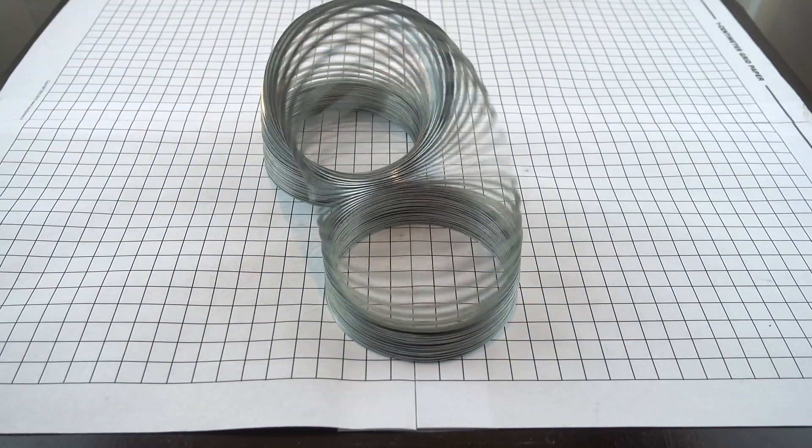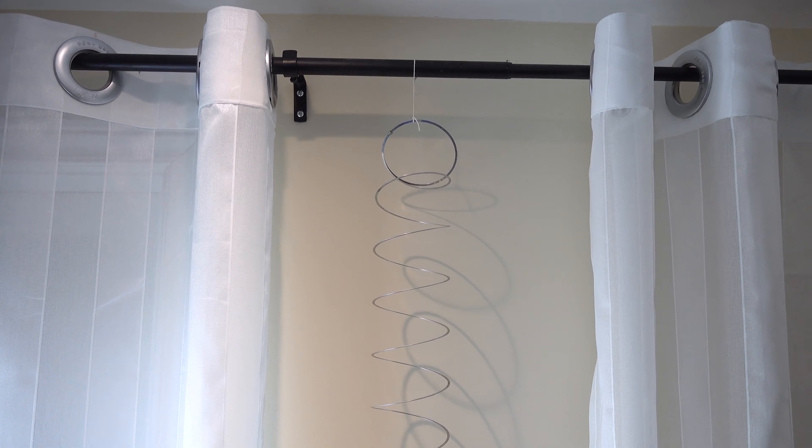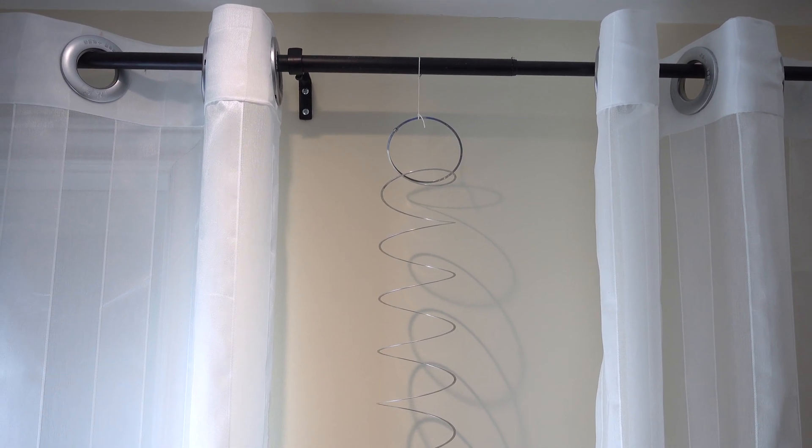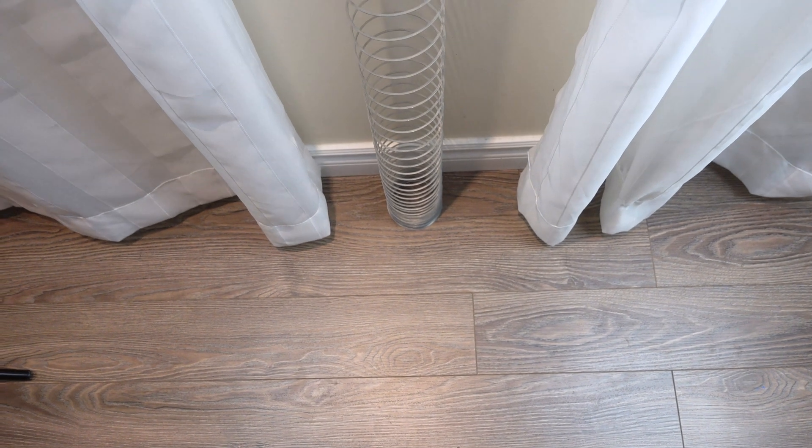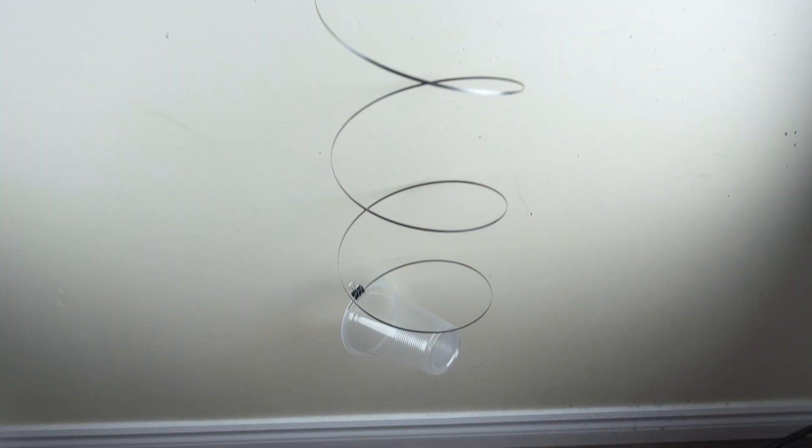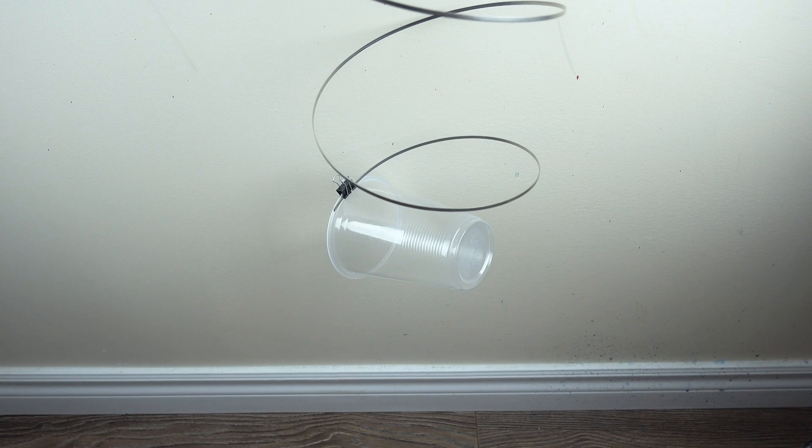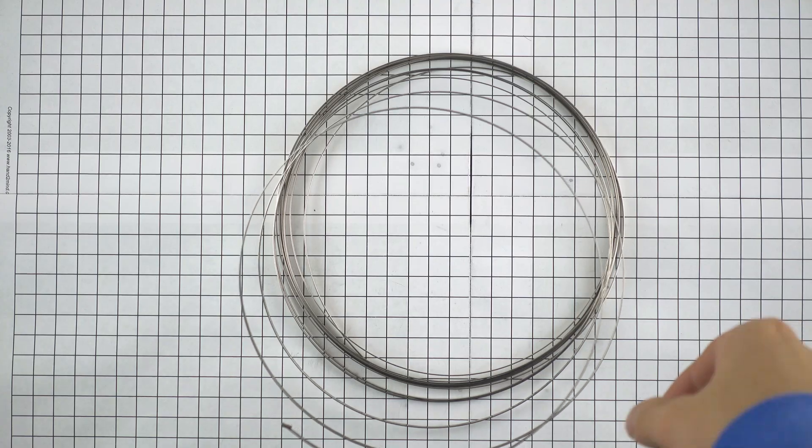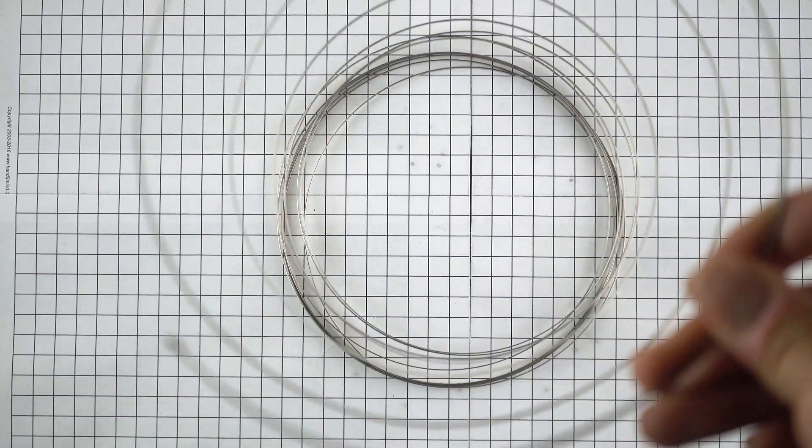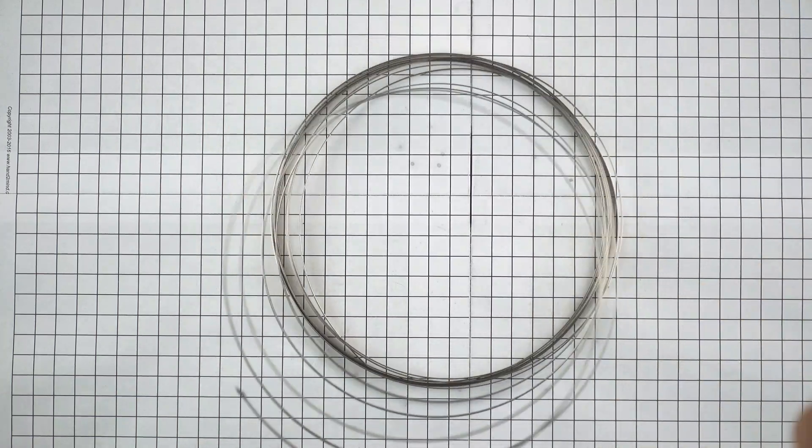The slinky that I use have a diameter of 8.5 centimeters and it has 86 turns. And the toy that I cut open has a diameter of 16 centimeters and it has 9 turns. So doing some math, we know that the slinky has a total length of around about 23 meters. And the toy has a total length of around about 4.5 meters. So this big difference between the length gives rise to the significantly different sound that we hear between the two springs.